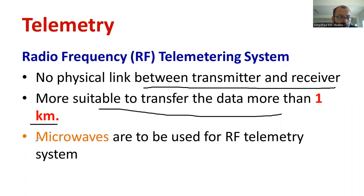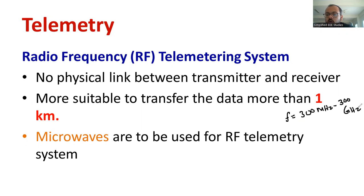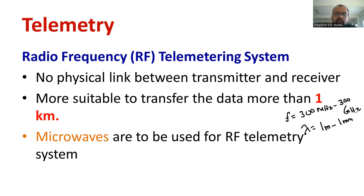Microwaves are used for this type of telemetry system. Let us discuss a few important specialties of microwave. The microwave is having the frequency range that varies from 300 megahertz to 300 gigahertz. Also, the wavelength lambda is in the range of one meter to one millimeter. This is the basic overview regarding the microwave.